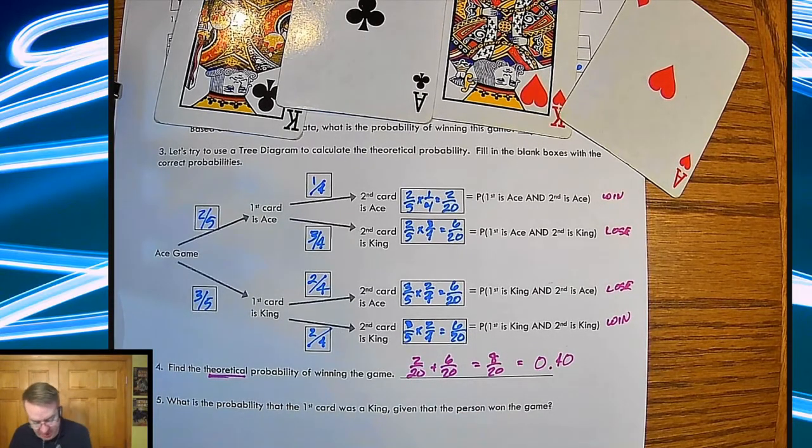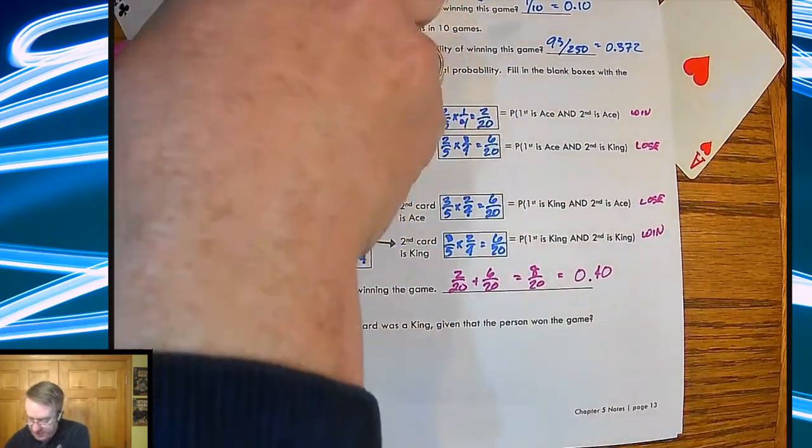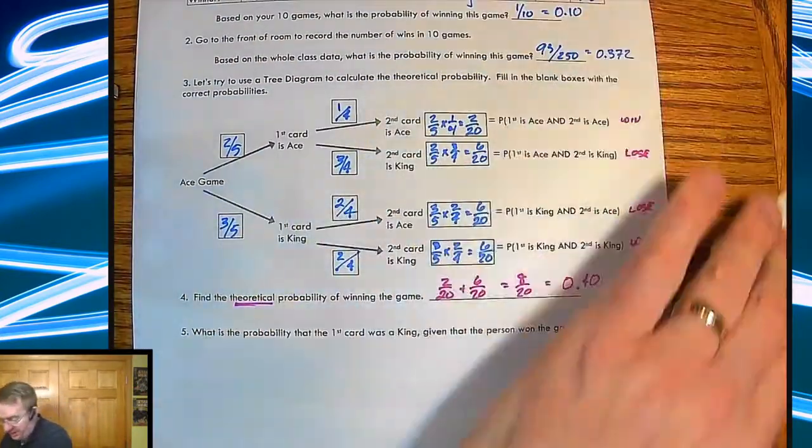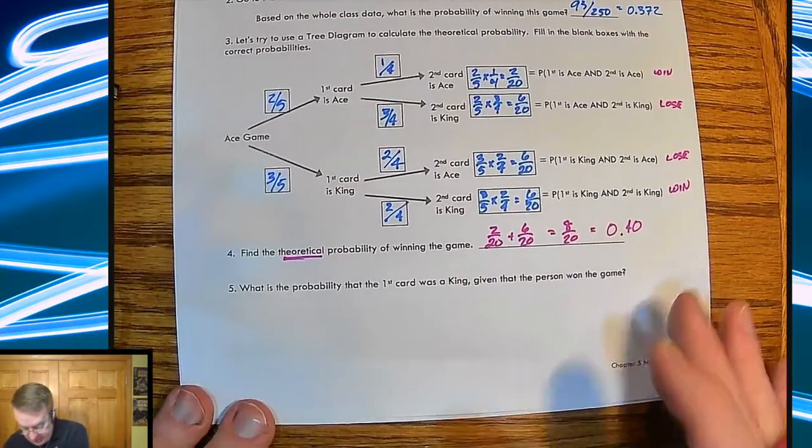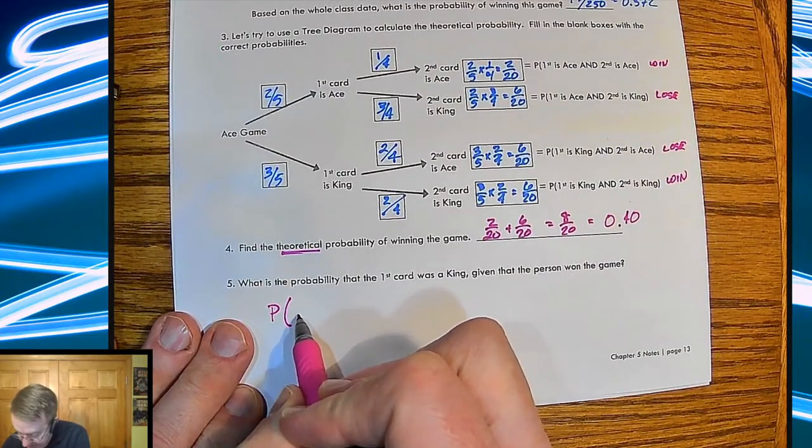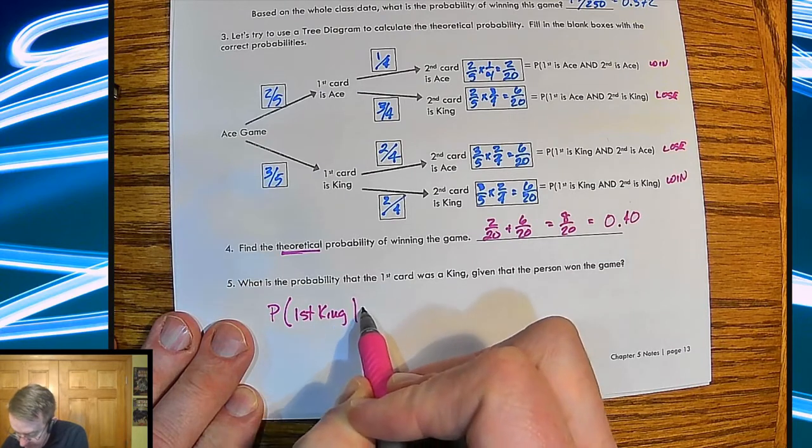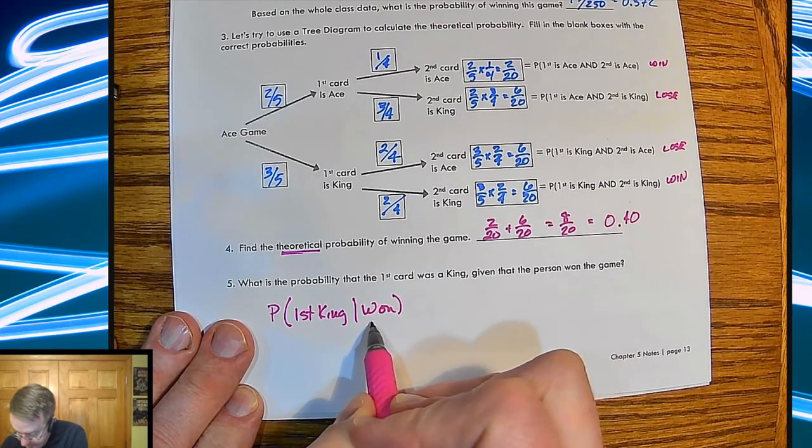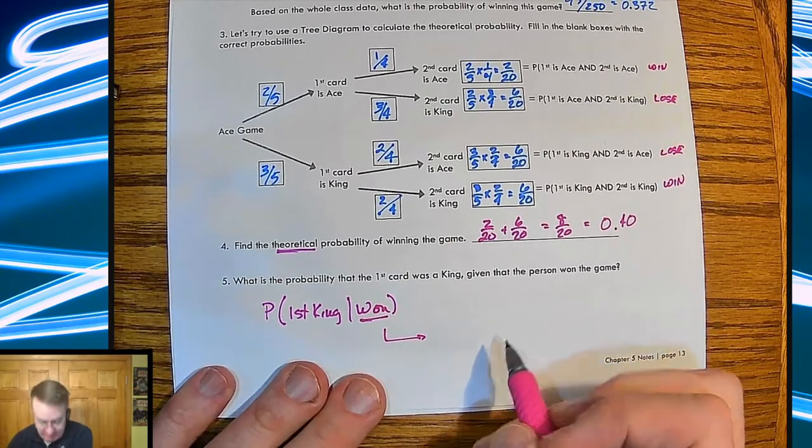Okay, so what is the probability that the first card is a king given that the second person won the game? I'm sorry, so probability that we got a first king but we know that we won the game.